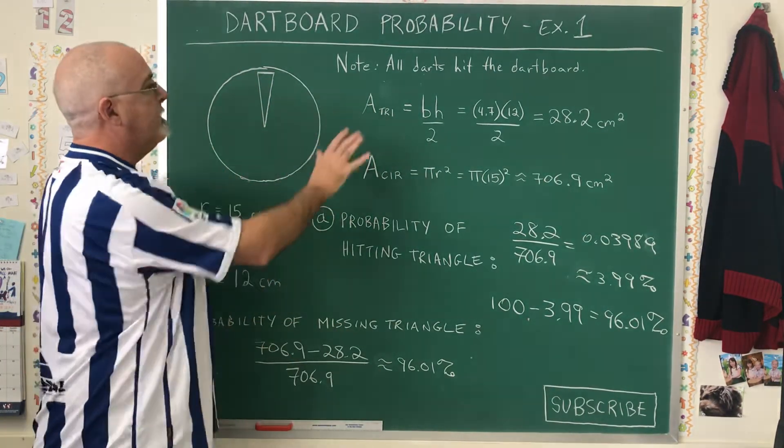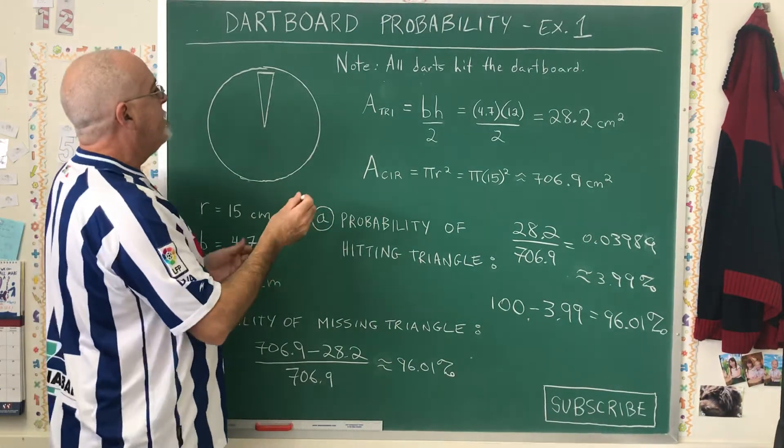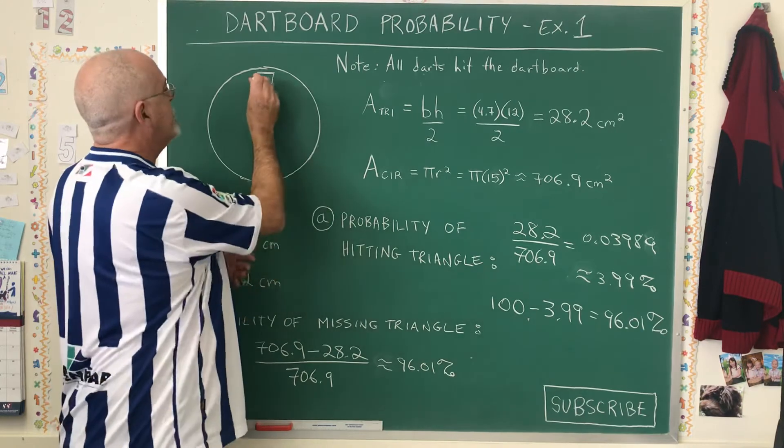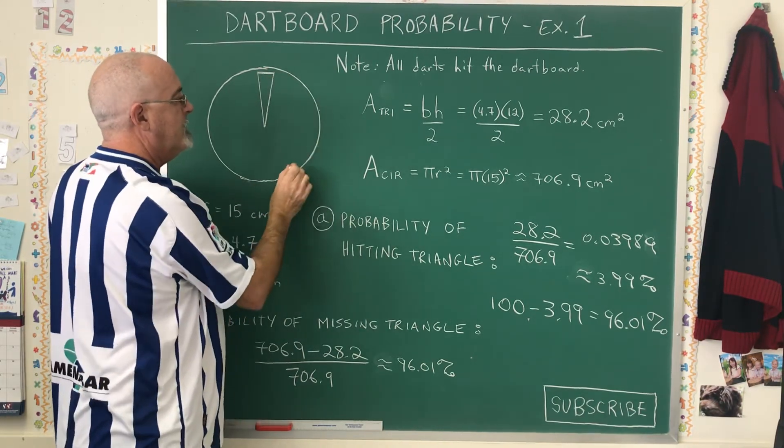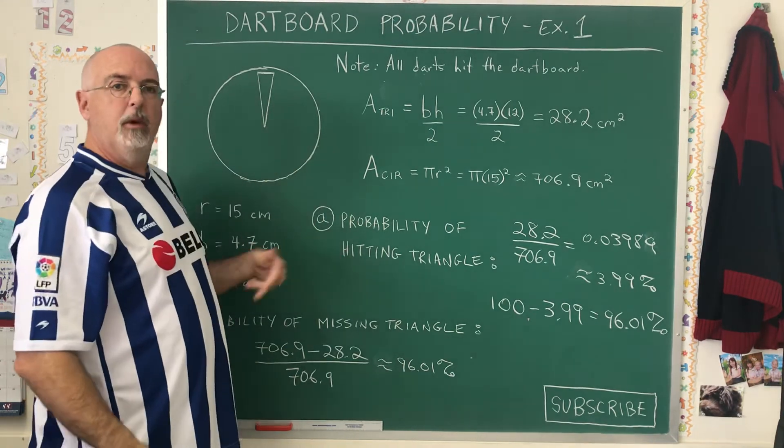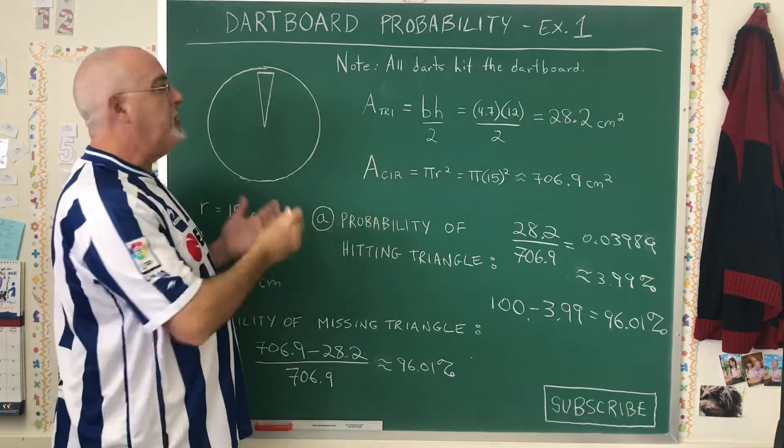Remember, when you are doing this sort of question, it involves area. We are not being asked to find the chances that a dart lands exactly on the edge of the triangle or exactly on the edge of the circle. If that were the case, we would be using perimeter instead of area. But dartboard questions tend to be about area.